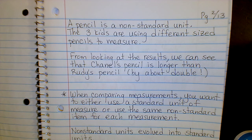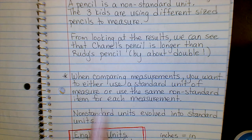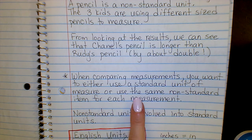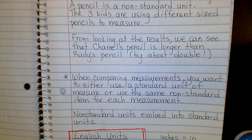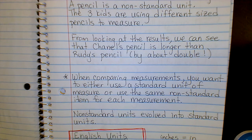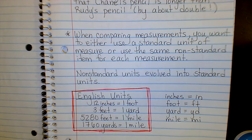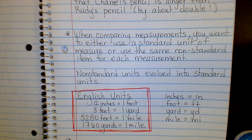What you can do is have all the kids measure with the same pencil — then you could compare results. When comparing measurements, you want to either use a standard unit of measure or use the same non-standard item for each measurement. Non-standard units evolved into standard units. Standard units are the ones we all agree upon as to how long they are. One non-standard unit that evolved into a standard unit is feet — people using their feet to measure the length of a room.